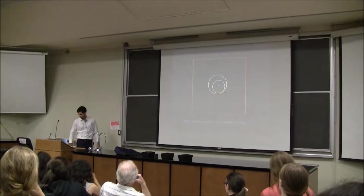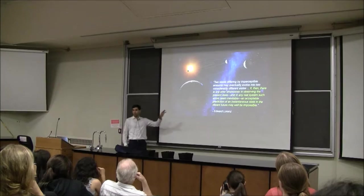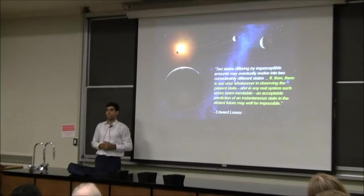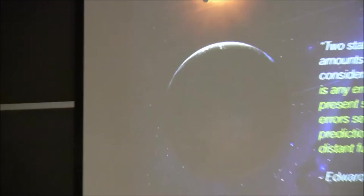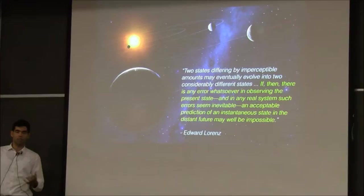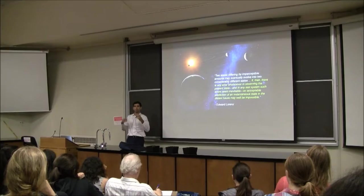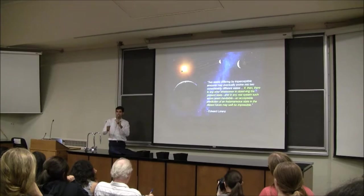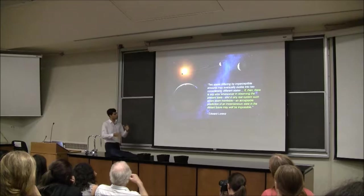Returning to our definition: two states that differ by small amounts can evolve into radically different states, and if there's any error in knowing the present state, knowing the future is also very difficult. That's why the weatherman is usually wrong. We can't measure today's temperature exactly — we know it's 23 and a half degrees, but we don't know 23.5467... and so on. If there's any difference there, predicting the weather 30 days from now will still be wrong.